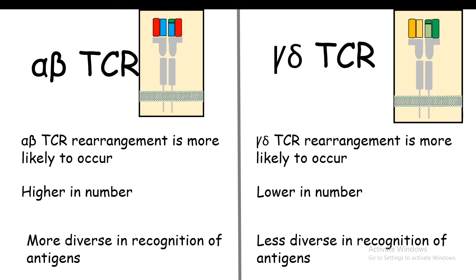To summarize the comparison: alpha-beta TCR rearrangement is more likely to occur, whereas gamma-delta TCR rearrangement is rare and less likely. Alpha-beta TCR-containing T cells are higher in number compared to gamma-delta TCR-containing T cells. Moreover, alpha-beta TCRs are more diverse in antigen recognition compared to gamma-delta T cells. In this video we looked at the development of gamma-delta T cells, where they develop, gamma-delta gene rearrangement, and a comparison of alpha-beta and gamma-delta T cells.